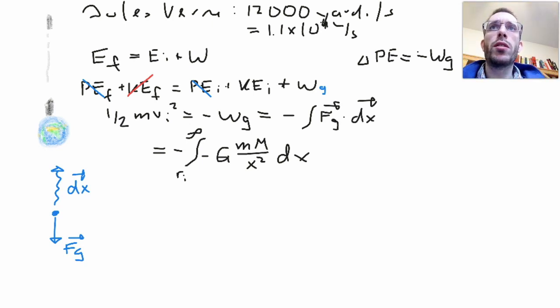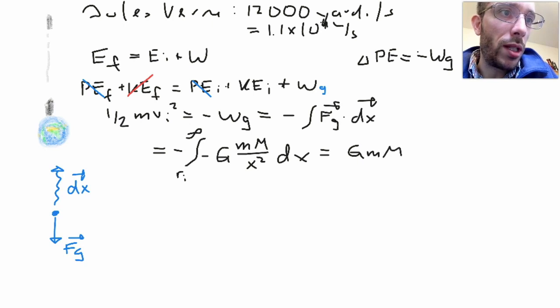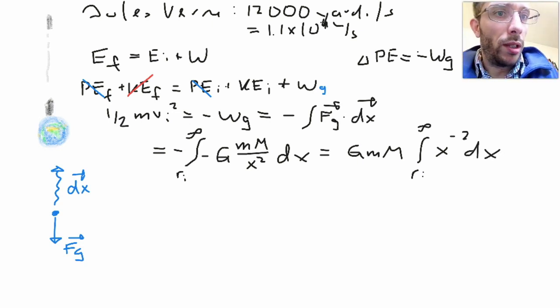So the minus actually removes the minus, so I can simplify as G is a constant, mass is a constant, mass integral from initial position to infinity, from x to the power of minus 2 dx. So what does this give me?